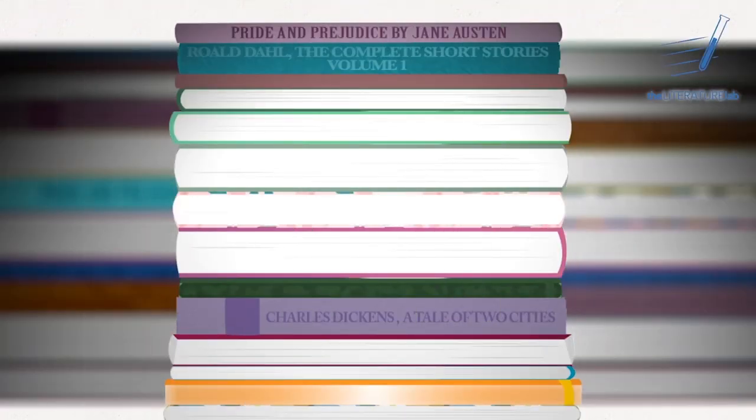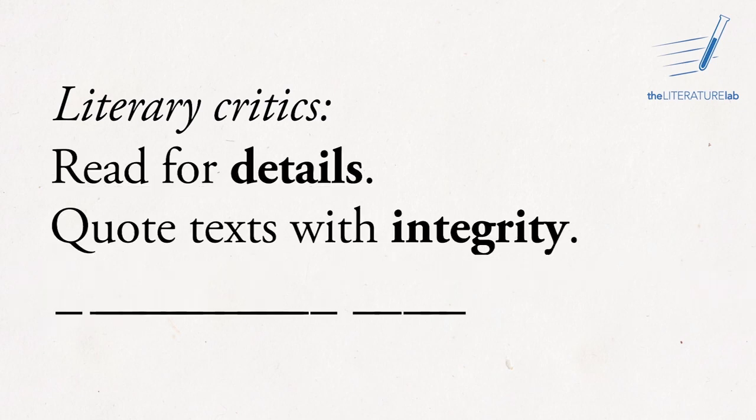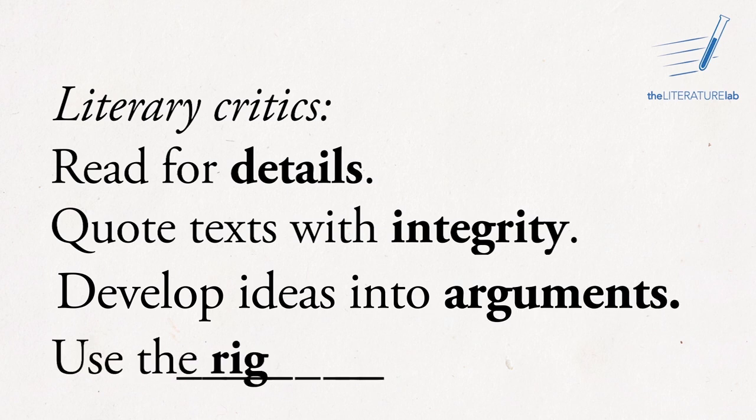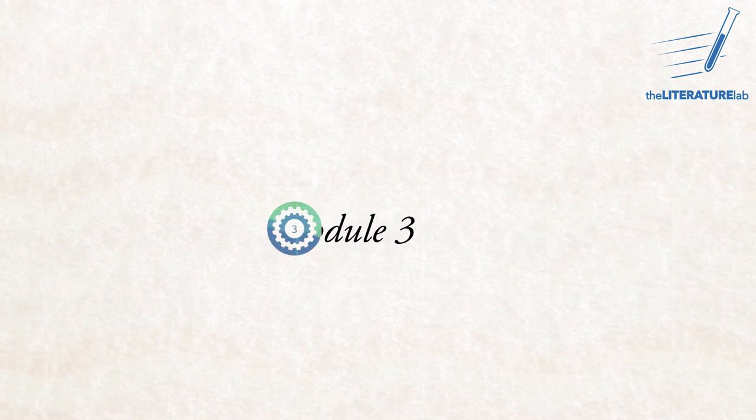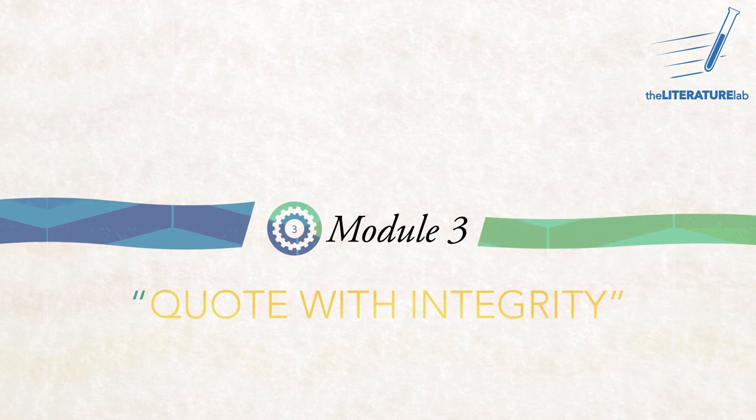Hi and welcome to the Literature Lab, where you learn to read texts and write arguments like a literary critic. That means you read for details, quote texts with integrity, develop ideas into arguments, and use the right language. I'm Michael Elliott from the Department of English at the University of Calgary. In the last video we learned how to move from reading a text to writing about it through the four stages of annotating, thinking, filtering, and summarizing. You annotate in order to gather quotations from the text, and these quotations are the evidence that make your argument convincing.